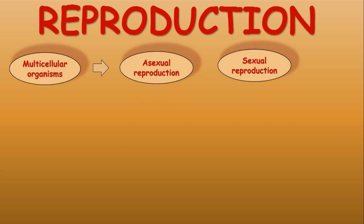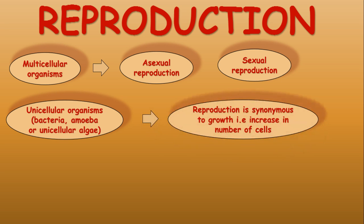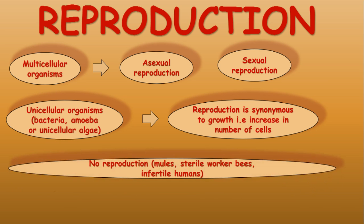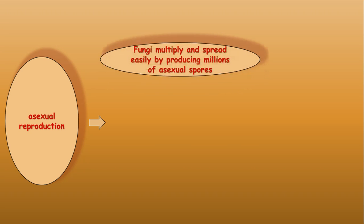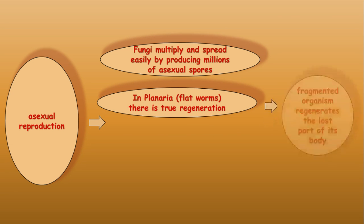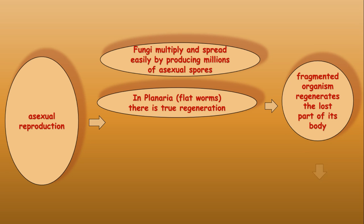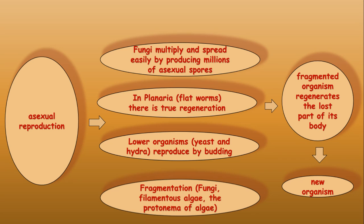The second characteristic is reproduction. Multicellular organisms undergo asexual reproduction as well as sexual reproduction, whereas in unicellular organisms like bacteria, amoeba, or unicellular algae, reproduction is synonymous to growth. Certain organisms like mules, sterile worker bees, and infertile humans do not undergo reproduction. Fungi multiply by producing millions of asexual spores. Planaria or flatworms show true regeneration, wherein a fragmented organism regenerates the lost part and becomes a new organism. Organisms such as yeast and hydra reproduce by budding.